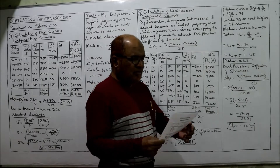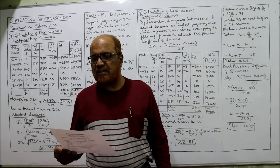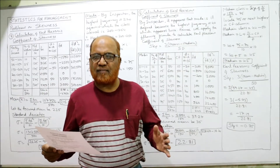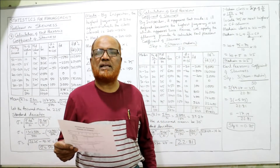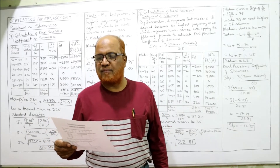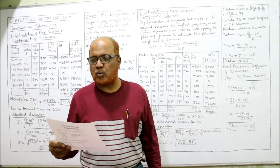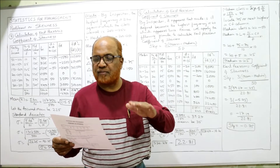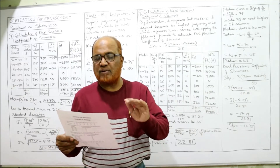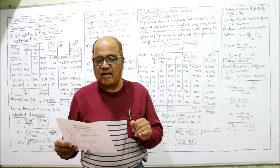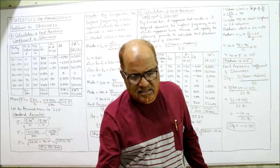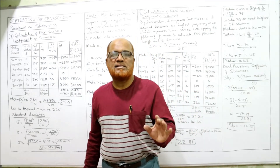Problem 7: The following table gives the distribution of monthly income of 500 workers in a factory. Monthly incomes: 50–100 (10 workers), 100–150 (25 workers), 150–200 (145 workers), 200–250 (220 workers), 250–300 (70 workers), 300–350 (30 workers). Calculate Carl Pearson's coefficient of skewness.